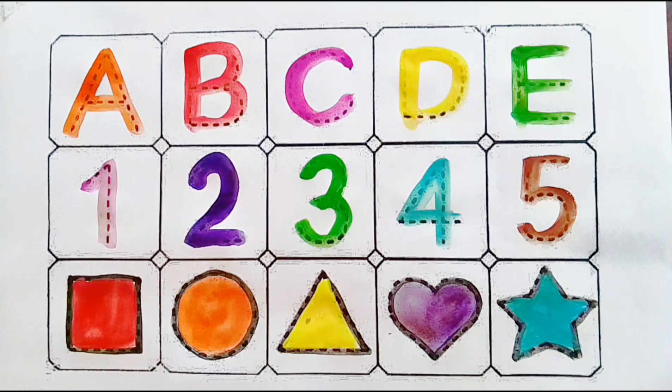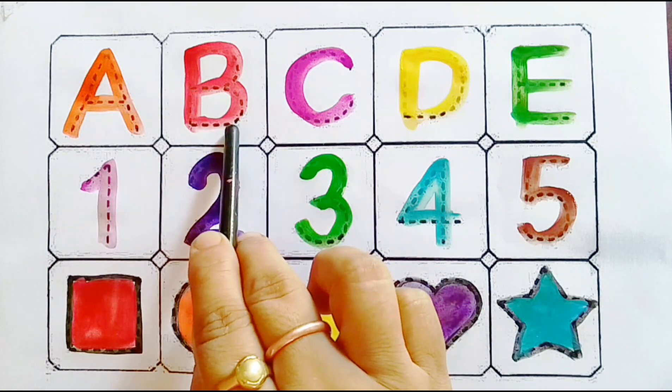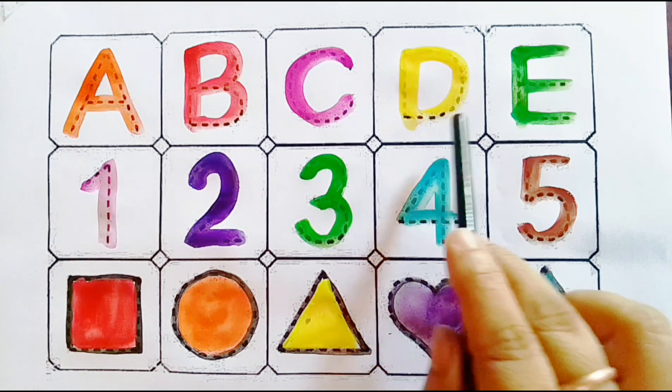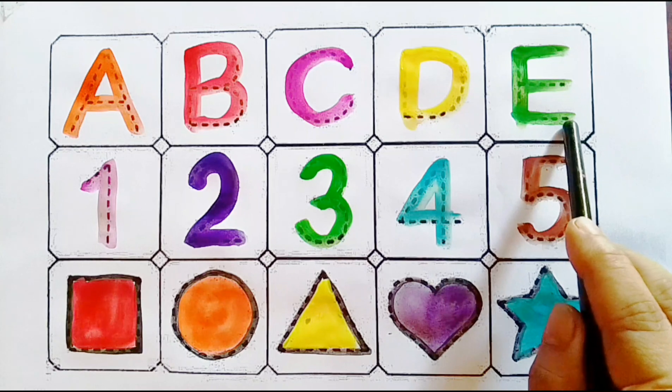Alphabets. A for apple. B for boy. C for cow. D for drum. E for egg.